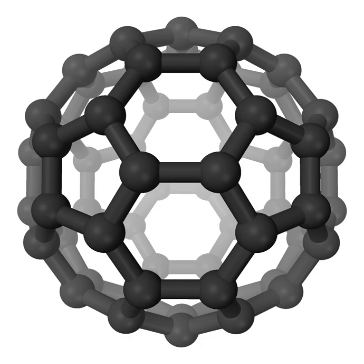Hydrogen isocyanide is a chemical with the molecular formula HNC. It is a minor tautomer of hydrogen cyanide. Its importance in the field of astrochemistry is linked to its ubiquity in the interstellar medium.